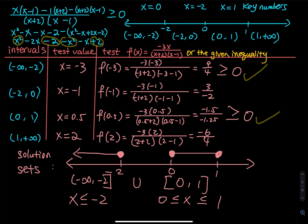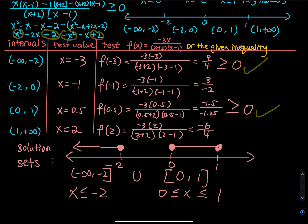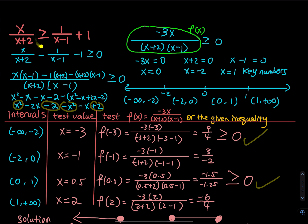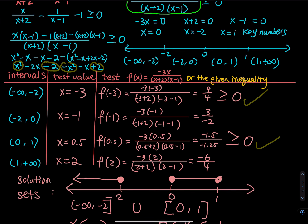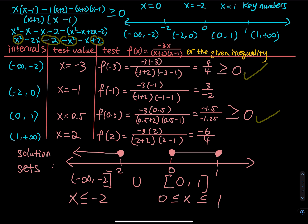You might ask why the test interval didn't use square brackets — that's okay. You don't have to use square brackets in the test interval. But when you present your solution set, always go back to the original problem, check if there is an equal sign, and then use solid circles and square brackets accordingly. That is the end of this video. If you like the way I teach rational inequality, give me a thumbs up and subscribe. I'll meet you all in the next lesson.